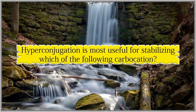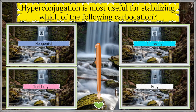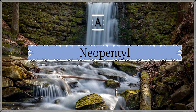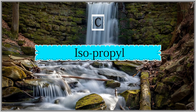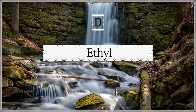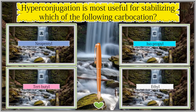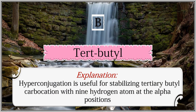Hyperconjugation is most useful for stabilizing which of the following carbocations? Options include neopentyl and ethyl. The answer is tert-butyl. Hyperconjugation is useful for stabilizing the tertiary butyl carbocation, which has nine hydrogen atoms at the alpha position.